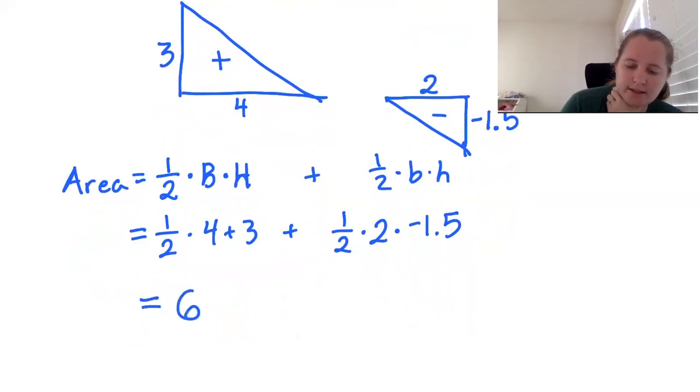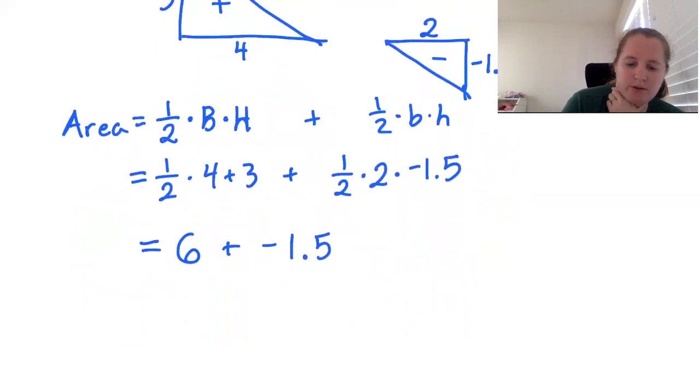So we have area 6 plus area negative 1.5, and we wind up with our total area of 4.5.